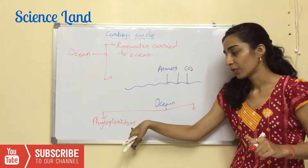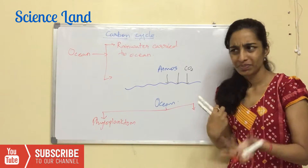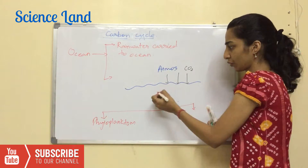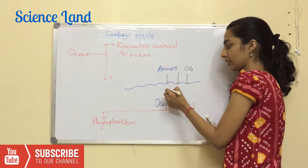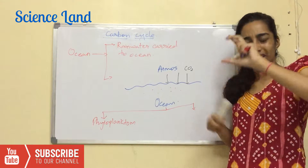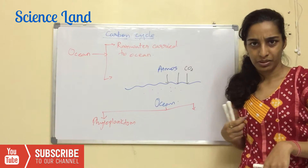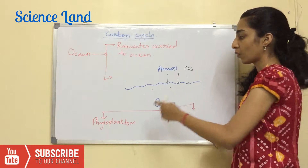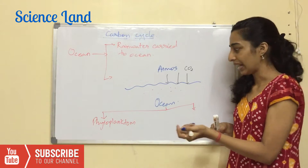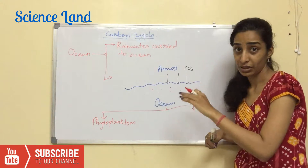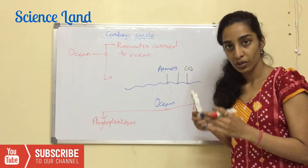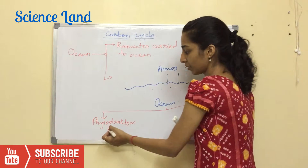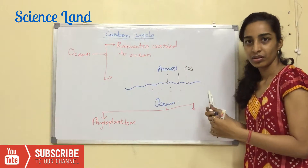Organisms known as phytoplanktons are autotrophs — they make their own food just like plants and need carbon dioxide and sunlight. They live in the upper layers of the ocean, not very deep, because sunlight decreases as you go deeper. Phytoplanktons use part of the dissolved CO2 to make their own food.